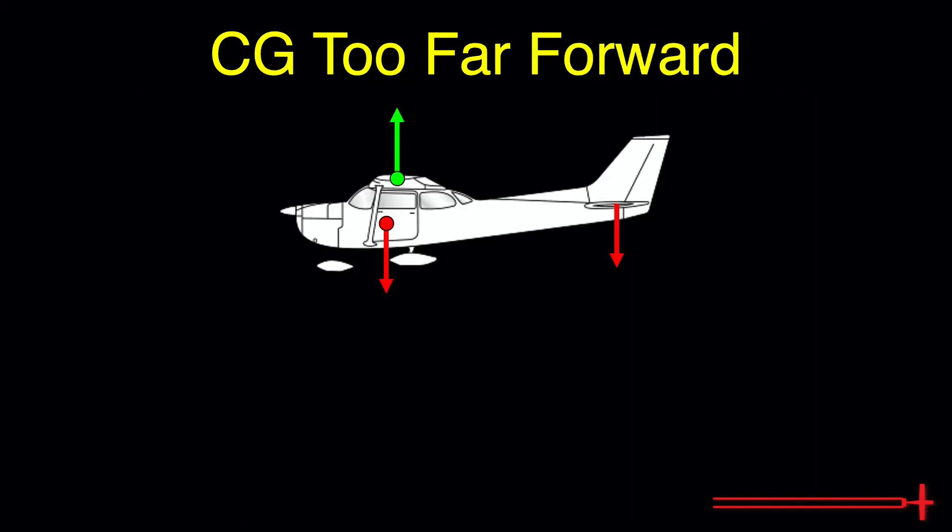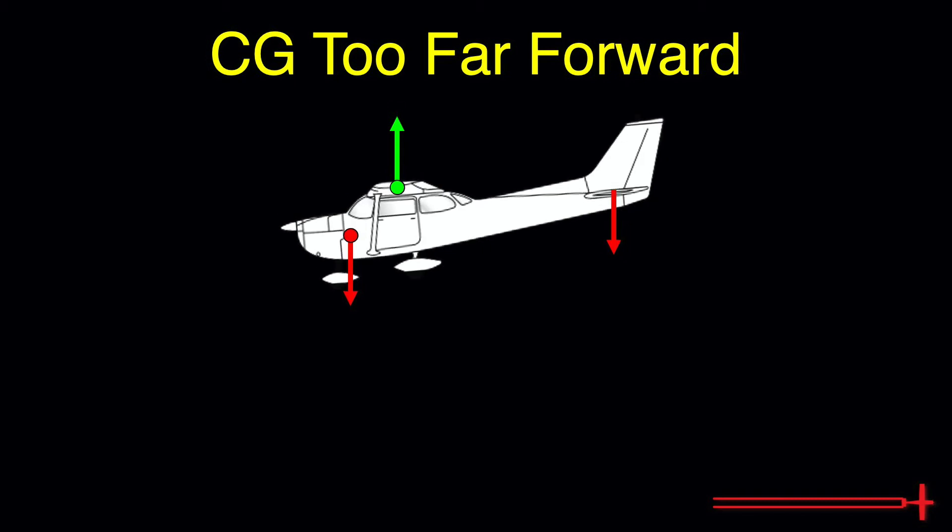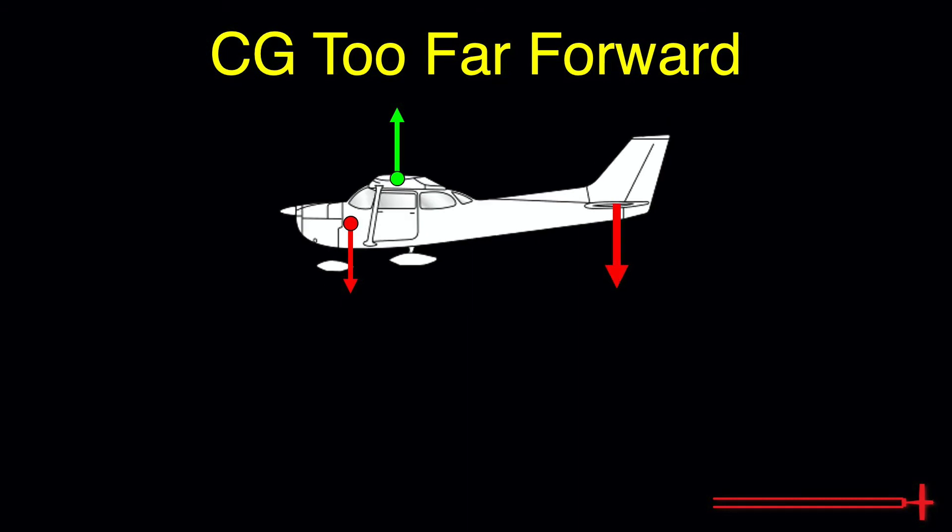Now, let's shift the CG too far forward. With the CG falling very far forward of the center of lift, the nose wants to fall downward in flight. To match this, the downward tail load needs to be increased to maintain level flight. In order to achieve this, the elevator must be held at a higher angle of attack. This greatly increases drag.